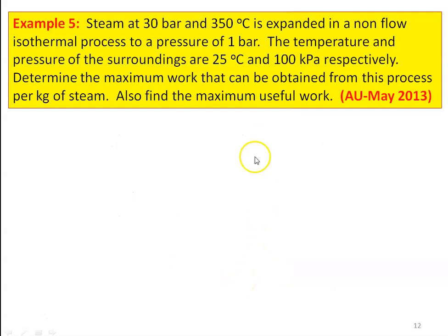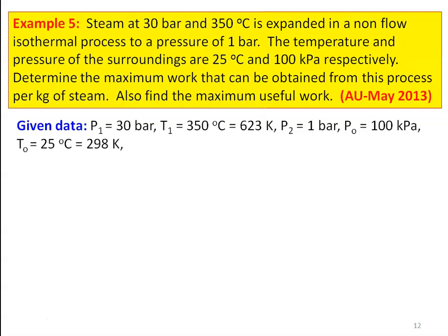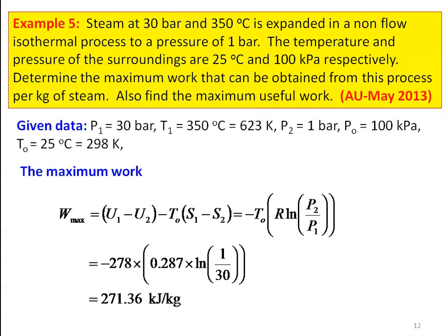Example number 5 from May 2013: steam at 30 bar and 350°C expands in a non-flow isothermal process to 1 bar. Surroundings are at 25°C and 100 kPa. Determine maximum work and maximum useful work per kg of steam. For isothermal process, U1 = U2, so W_max = −T0·R·ln(P2/P1) = −278×0.287×ln(1/30) = 271.36 kJ/kg.